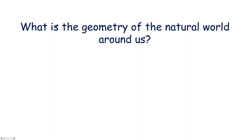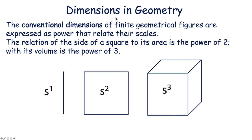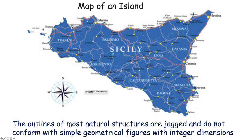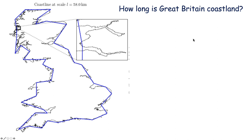The next question is: what is the geometry of the natural world around us? We come to the very simple origins of geometry — one dimension, a line; two, a surface; three dimensions of a volume. These are different powers — to the one, to the two, to the third — of the same linear dynamics of Euclidean geometry. The problem arises when people try to imagine how to map the outline of an island. The outlines of most natural structures are jagged and do not conform to simple geometrical figures with integer dimensions.